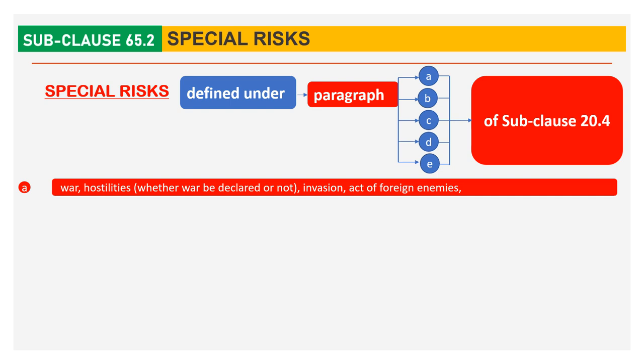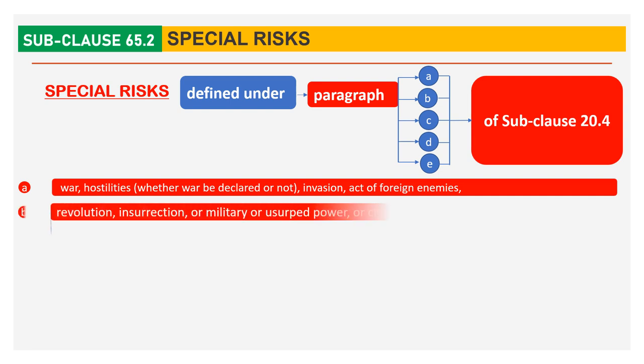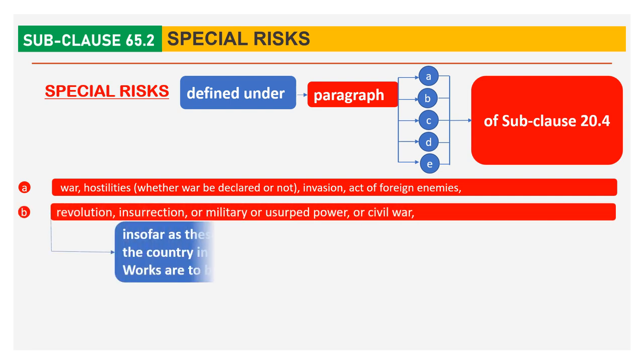Risk A: War, Hostility, Invasion, Act of Foreign Enemies. Risk B: Revolution, Insurrection or Military or Usurped Power, or Civil War, insofar as these relate to the country in which the works are to be executed.